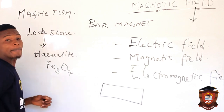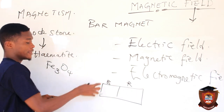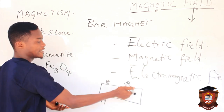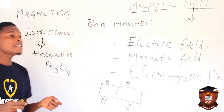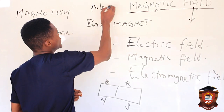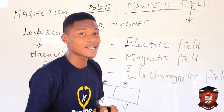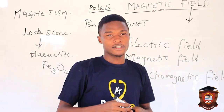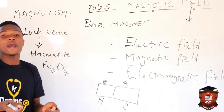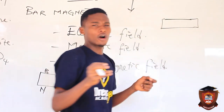Anytime we have a bar magnet, just like the name suggests, it is like a bar. Sometimes it has two colors — black on one side and red on the other. The black side represents the north and the red side represents the south. So all magnets must have two poles. The pole of a magnet is the point on the magnet where the magnetism is concentrated.